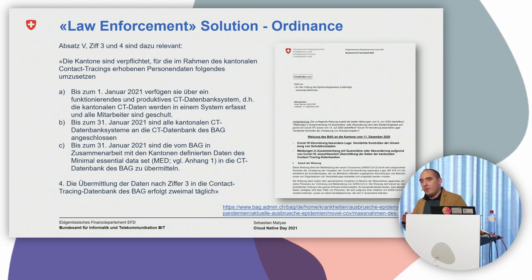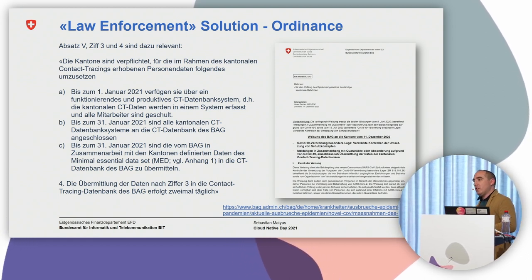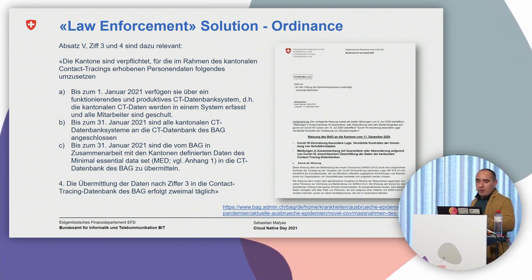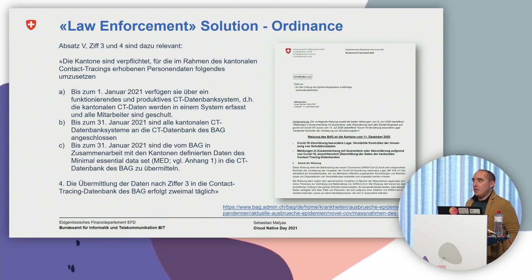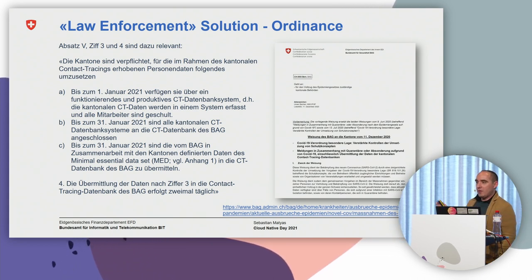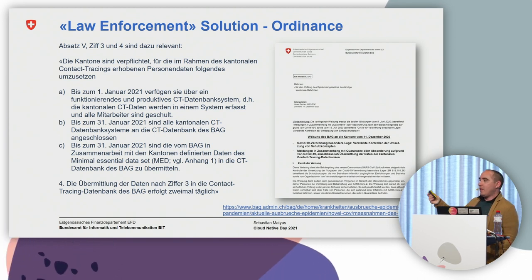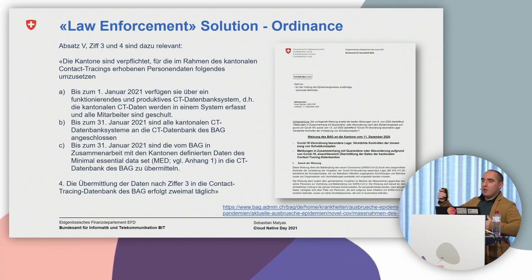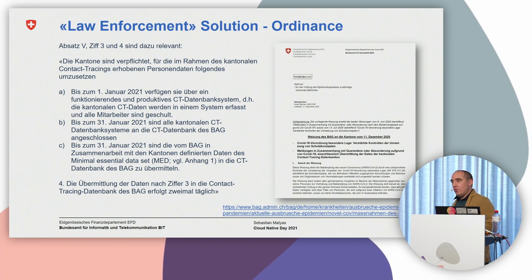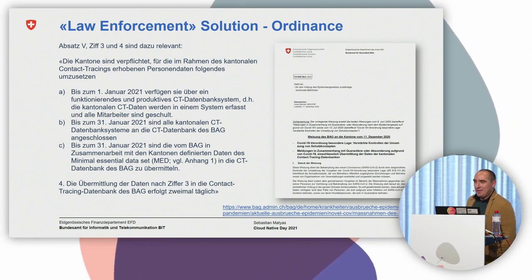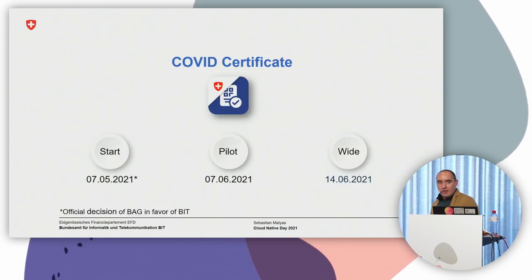That's why it took half a year to make the system truly operational — it was only ready after the second wave. The details of the ordinance are publicly available in German, including an appendix listing the minimal essential dataset that is collected from each COVID contact tracing case.